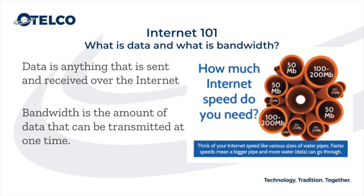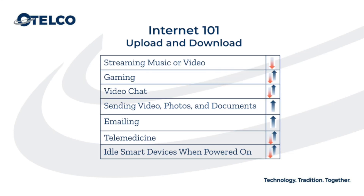So 5 megabits per second means that it takes one second for 5 megabits of data to travel through the pipe. It's important to understand that bandwidth refers to the size of your pipe.